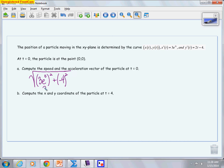This one actually could be done without a calculator. You get 3², which is 9. 4², which is 16. The square root of 9 plus 16 is 5. So that's my speed pretty quick.